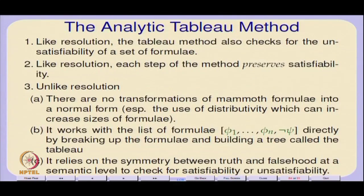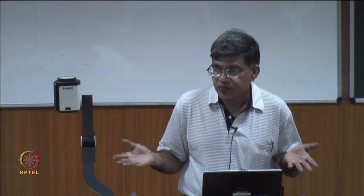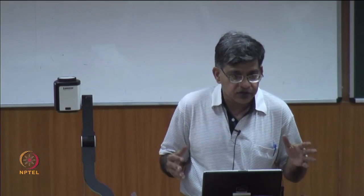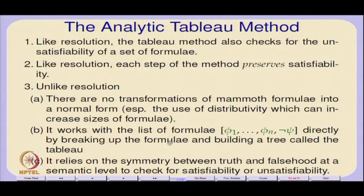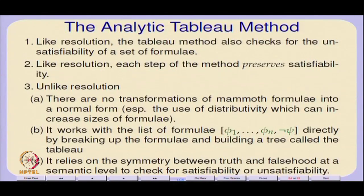You are already guaranteed that for these n+1 formulae, once you have broken them all up the tableau will end — it is some finite tree. There is no possibility of it going on forever, so termination is guaranteed in the tableau method. The other thing is that the tableau method relies on the symmetry between truth and falsehood — after all, you could just think of them as two values belonging to a complete lattice, with no reason to have any asymmetry between them.